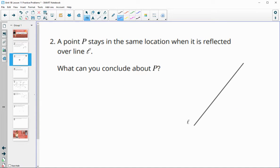Number two, a point P stays in the same location when it's reflected over this line. What can you conclude about P? We can conclude that P is on line L. In order for it to stay when it's reflected, it would be somewhere on that line.